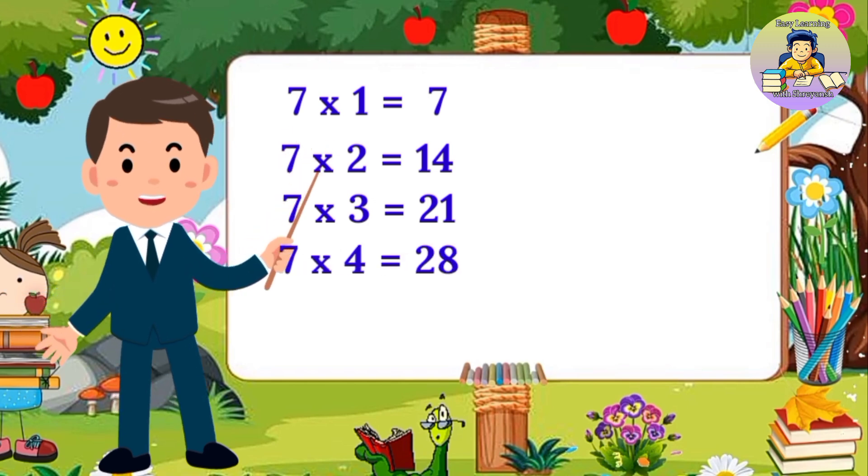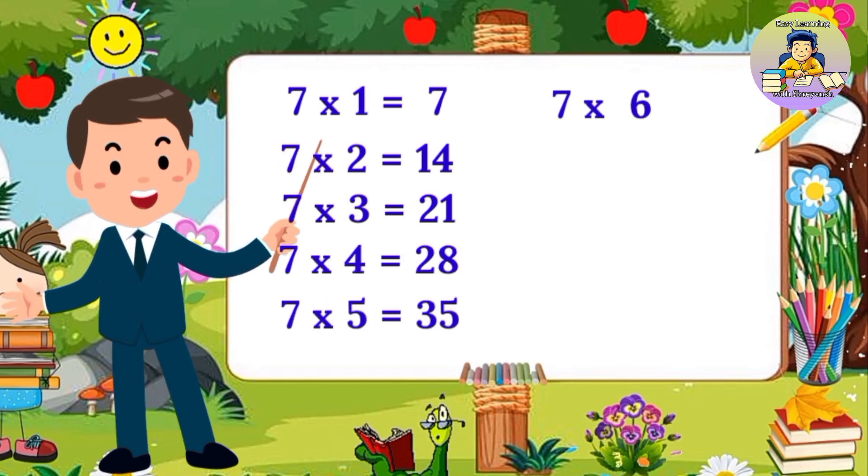7, 4's are 28. 7, 5's are 35. 7, 6's are 42.